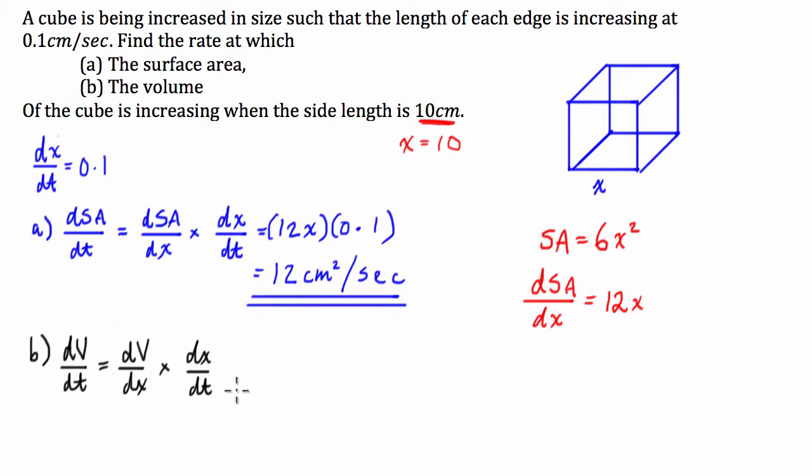So to compute this relation we're going to have to figure out a volume equation. Now the volume of a cube or any kind of rectangular prism is length times width times height so V in terms of x is going to be just equal to x cubed. So dV/dx is going to be equal to 3x squared.